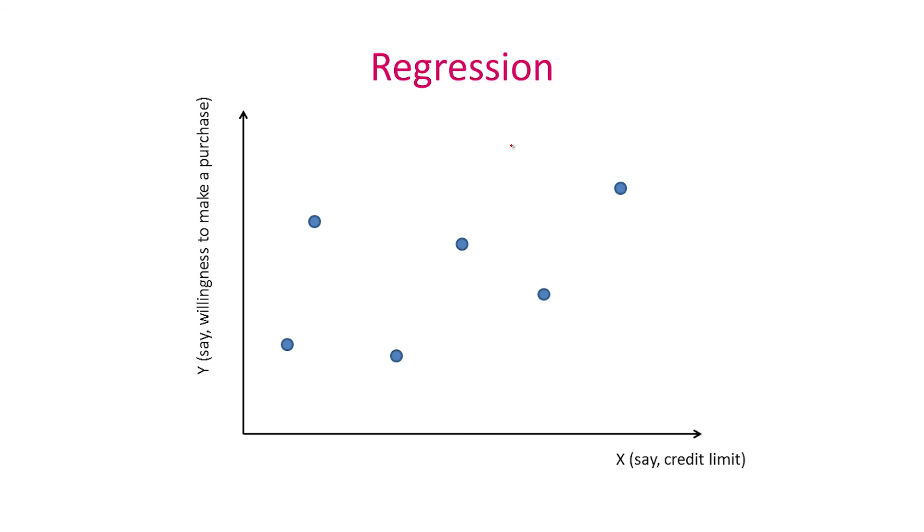Now, what does regression actually do? In order to try and understand the logic behind regression, let's think about the relationship between one variable, x, which is the cause. In this case, let's say we're looking at the effect of the credit limit on your credit card on y, which is, let's say, the willingness to make a purchase. Now, let's imagine you've actually collected some data. Here you've got responses from six different people where you have different levels of credit limit, which are the x's. And for each x, you know what the y is because your experimental participants actually tell you what their willingness to make a purchase is.